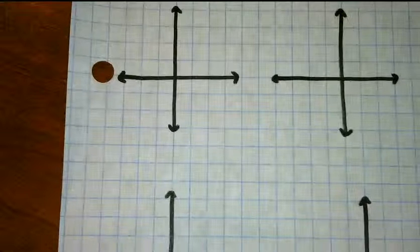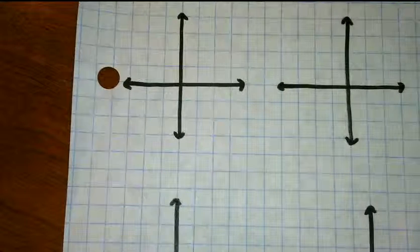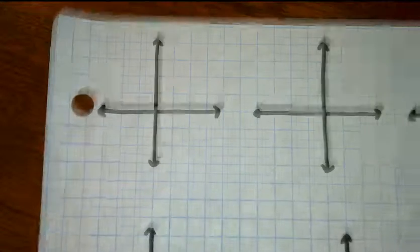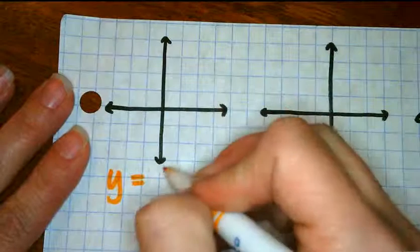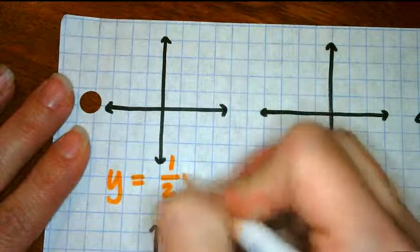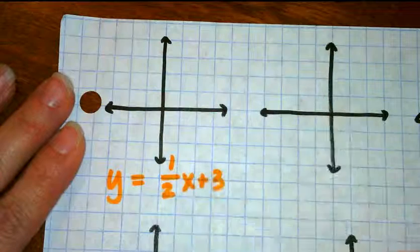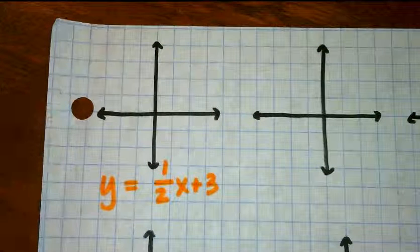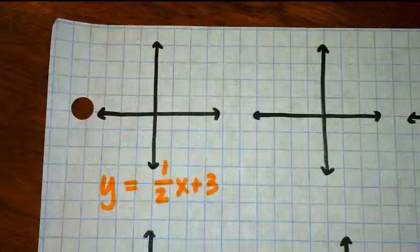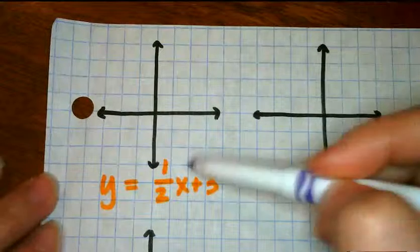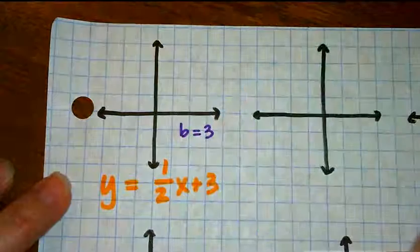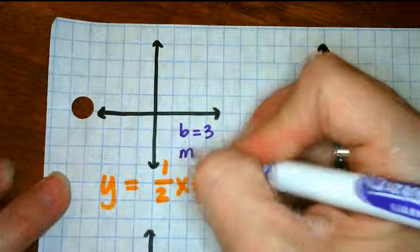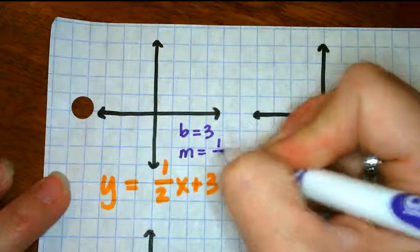I have some graphs. I'm going to make up some problems as we go and make sure that we cover all the possible questions. The first one I'm going to do is y equals one-half x plus 3. I am always going to start by naming my b and the y-intercept. My y-intercept is 3 and the slope for this line is one-half.